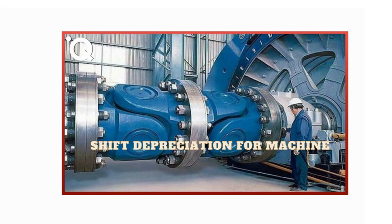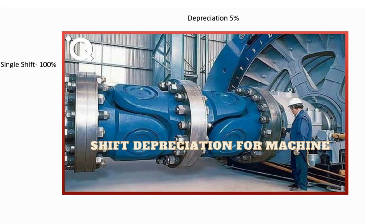That is why, as per the Government of India and the Indian Companies Act, manufacturing companies need to depreciate more on machines running in more than one shift. Let's take an example: if the depreciation percentage for one machine is 5% for a single shift, for double shift it becomes 150% which is 7.5%, and for triple shift it is 200% which means 10% depreciation.